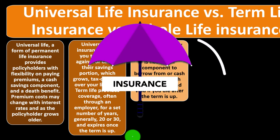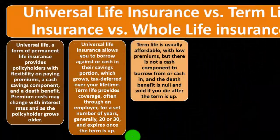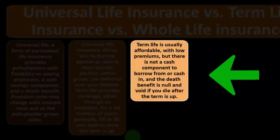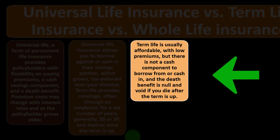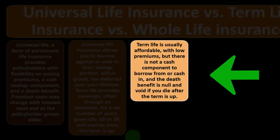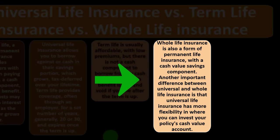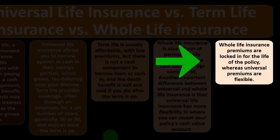Term life is usually affordable with low premiums, but there is no cash component to borrow from or cash in, and the death benefit is null and void if you die after the term is up. You can usually plan for term life insurance pretty well because you're buying straight life insurance for a term when people are dependent upon you — often when starting a family, when you might have a mortgage, debt, not a lot of net assets, and many liabilities. But after people are grown, after you've paid off the mortgage, later in life with fewer dependents, you can figure out the term insurance with pretty good odds. Whole life insurance is also a form of permanent life insurance with a cash value savings component, with premiums locked in for the life of the policy, whereas universal premiums are flexible.